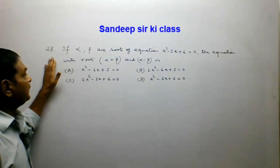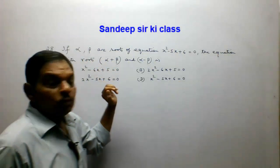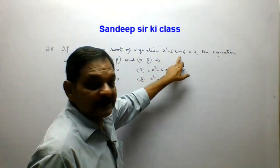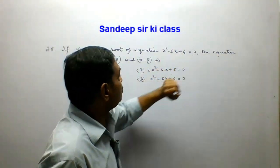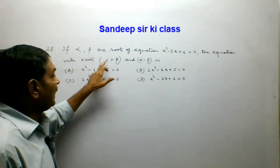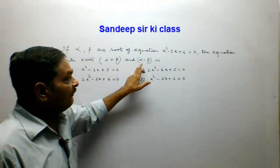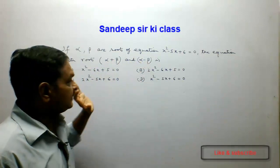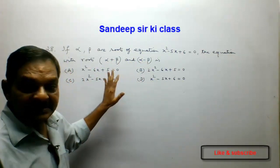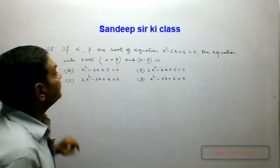Question number 28. If alpha and beta are the roots of the equation x squared minus 5x plus 6 equals 0, the equation with roots alpha plus beta and alpha minus beta is required. Four options are given, and we have to choose the correct answer.